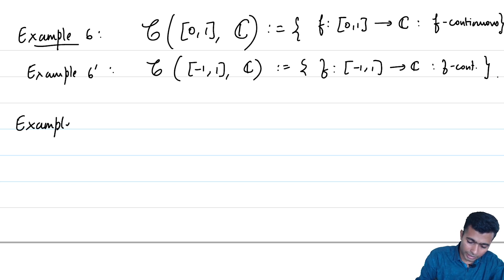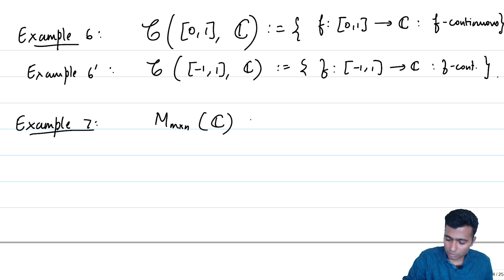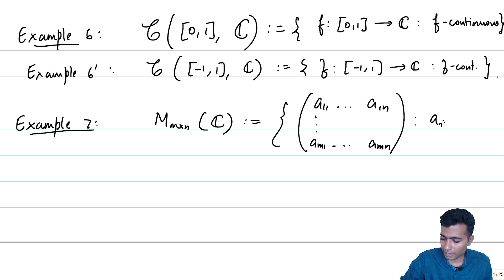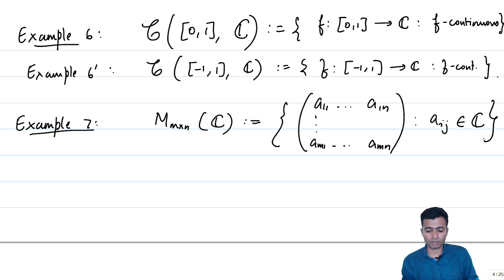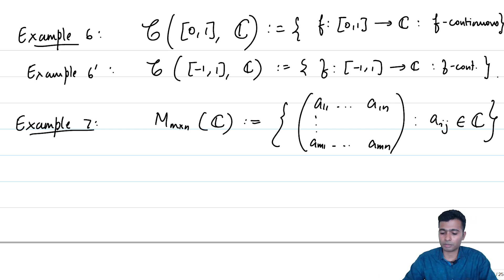A very important example is M_{m×n}(C), the space of m×n matrices with entries a_{ij} that are potentially complex numbers. Vector addition and scalar multiplication are both defined component-wise. So we could consider vector spaces over complex numbers, and there are many examples as we can see.